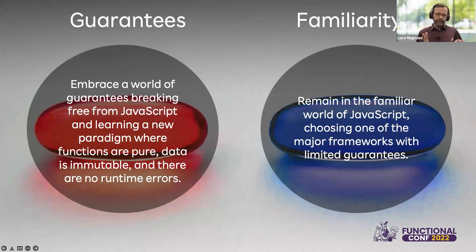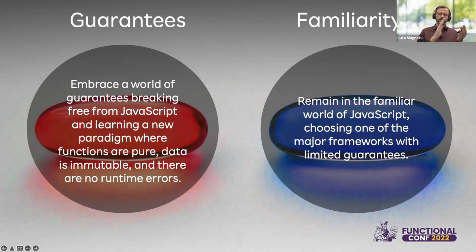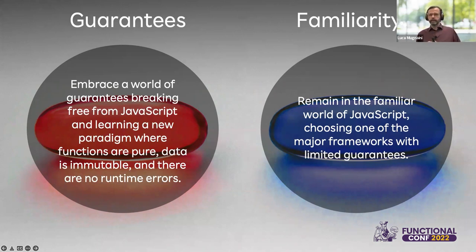At the end of our investigation three years ago, we were faced with this decision: do we take the red pill and move away from JavaScript, embracing a new language and a new paradigm? Or do we take the blue pill and remain in a world familiar to JavaScript, choosing one of the mainstream frameworks? In short, do we choose guarantees or familiarity? Well, we didn't agree with the idea that if something is popular it must be good, and we were excited about the innovative and disruptive ideas of Elm. So we took the red pill.